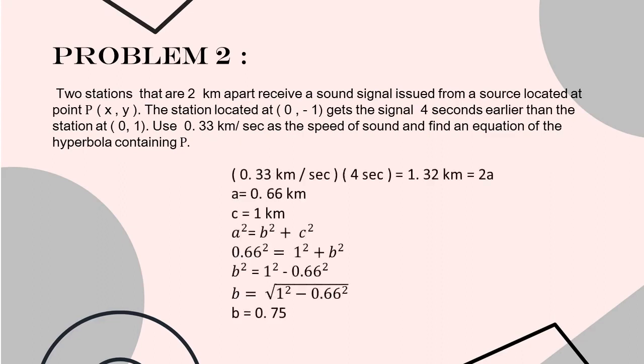From the given speed of sound, we get 0.33 kilometers per second times 4 seconds equals 1.32 kilometers. As you can see, our product is less than the given distance, which is 2 kilometers. Therefore, we can infer that our focus is 1. Dividing 1.32 kilometers by 2A, then we will get the value of our A, which is 0.66 kilometers.